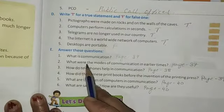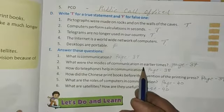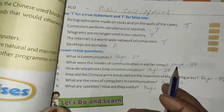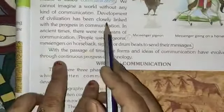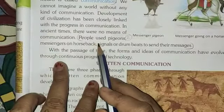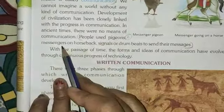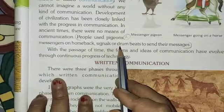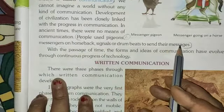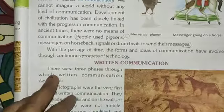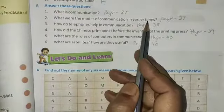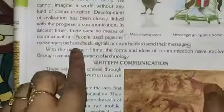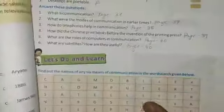Now next, question number 2, what were the modes of communication in earlier times? This is also in page number 37 itself. From this first paragraph only, last line. People used pigeons, messengers on horseback, signals or drumbeats to send their messages. Here you will write the first line from the question. The modes of communication in earlier times are, then you will write this one.